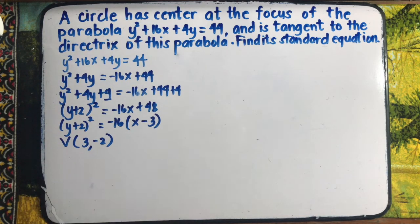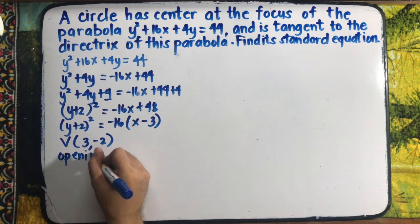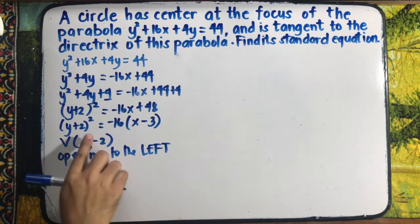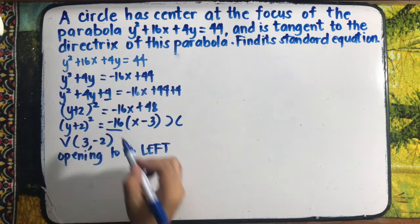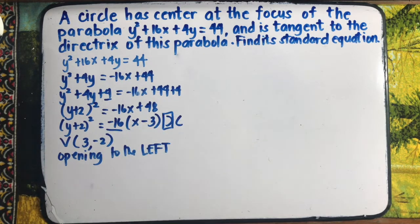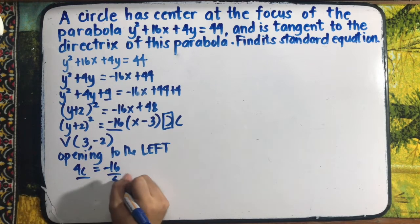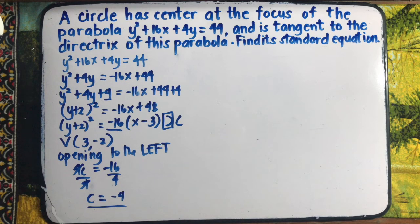Since the right side is negative and we have y², this parabola opens to the left. With the vertex at (3, −2), we find c using 4c = negative 16, so c = negative 4, meaning c has magnitude 4.